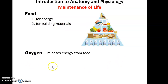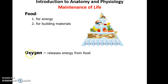We also need oxygen. Oxygen is used to release energy from food — we need the food as the source to burn and the oxygen to allow the burning to occur, which then allows us to produce energy.